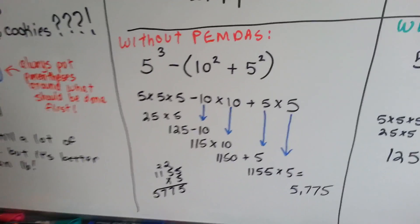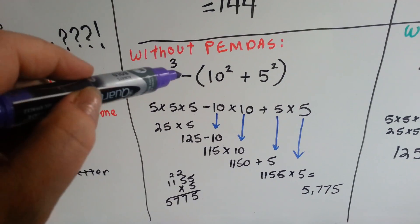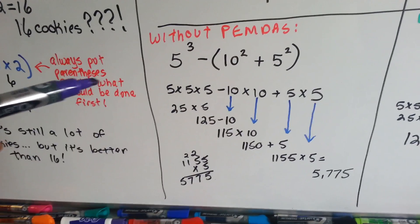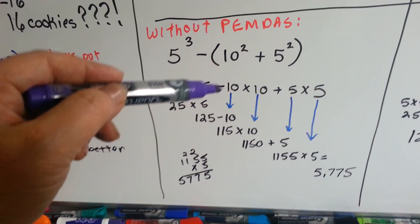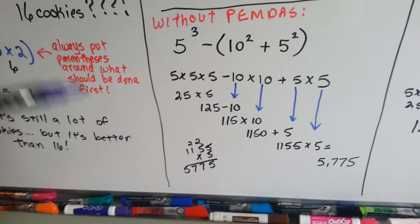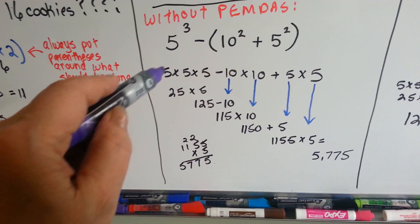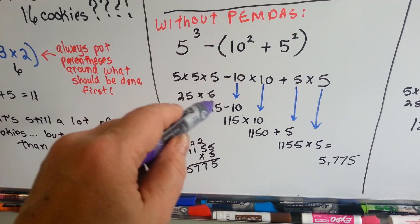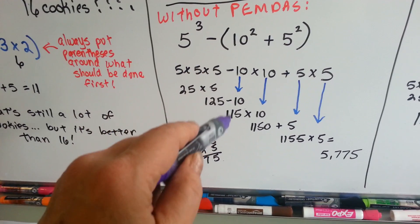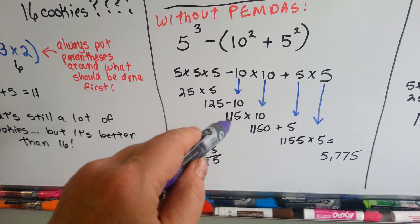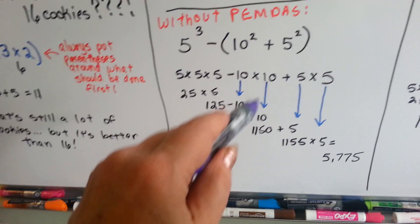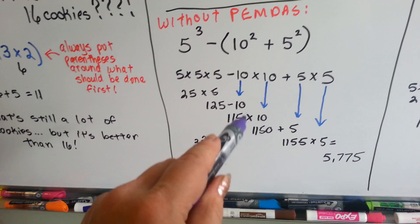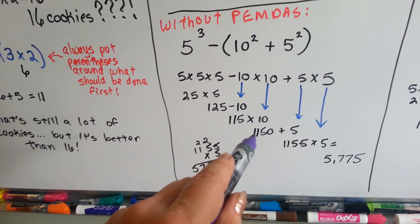Now, I'm going to show you another one. We've got 5 to the 3rd power minus 10 to the 2nd power plus 5 to the 2nd power. So, we're just going to go straight across. We opened it all up. 5 times 5 times 5 minus 10 times 10 plus 5 times 5. And we're just going to go straight across and see what happens. So, we'll do the first two. 5 times 5 is 25. We multiply that by 5, and we get 125. Now, we have to subtract 10, and we get 115. Now, we have to multiply that by 10. Well, whenever you multiply anything by 10, you just add a 0 onto the back of it. So, instead of 115, we have 1,150.